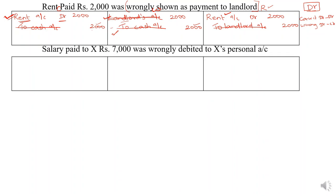The next example: salary paid to X rupees 7,000 was wrongly debited to X's personal account. The correct entry is salary account debit to cash account, rupees 7,000. But what was entered? Instead of debiting salary account, X's account was debited: X account debit to cash account, rupees 7,000.